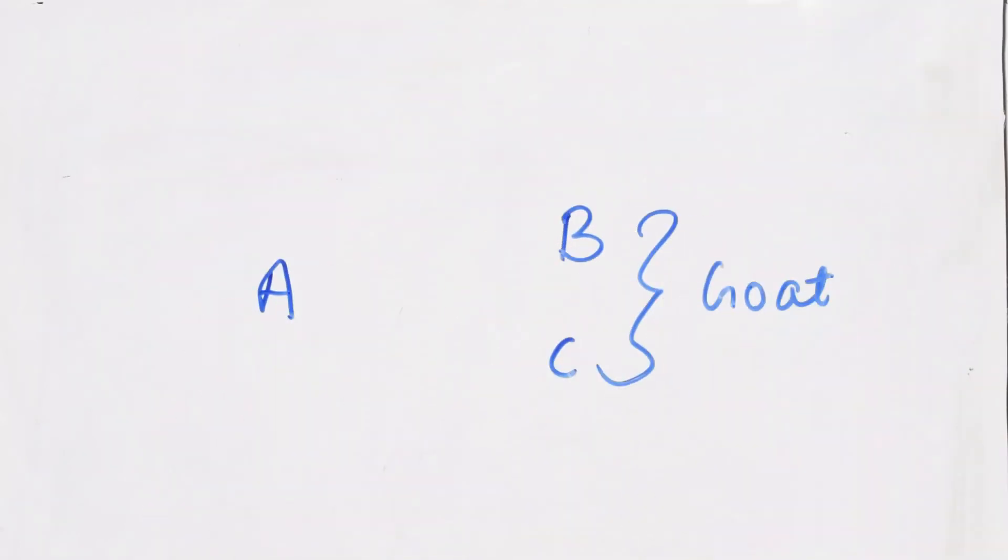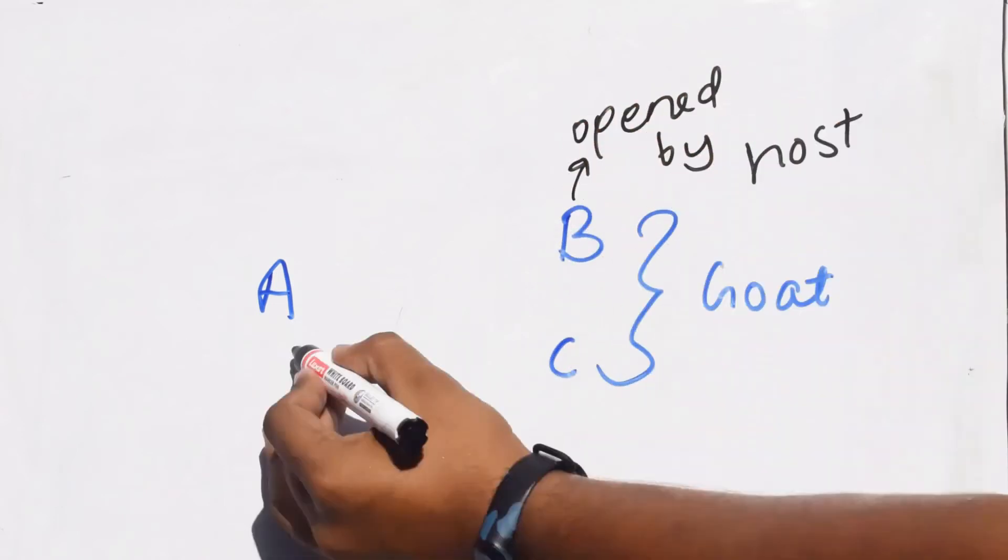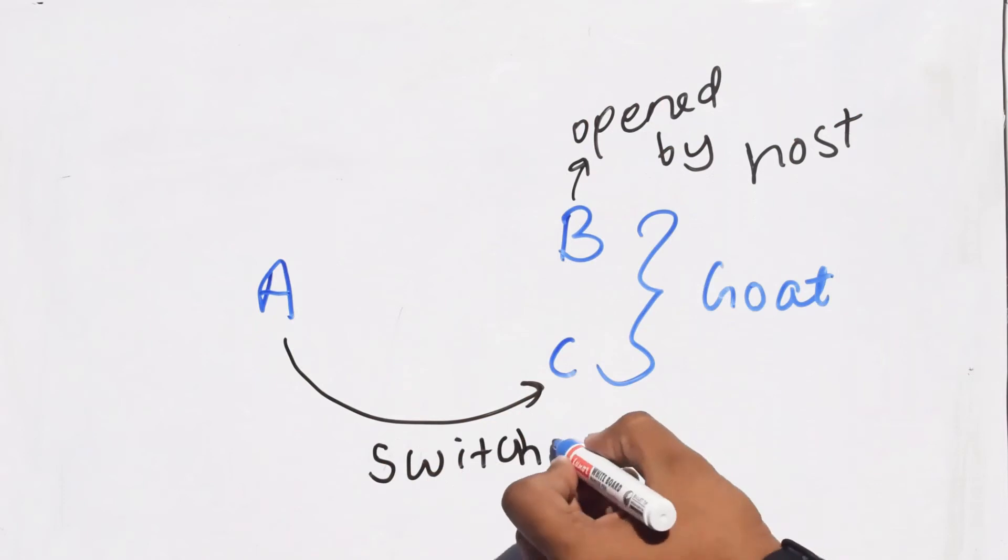Now in the situation when you chose the right door, if you switch you lose the money. But the chance of guessing the right door on an initial guess is only 1/3.